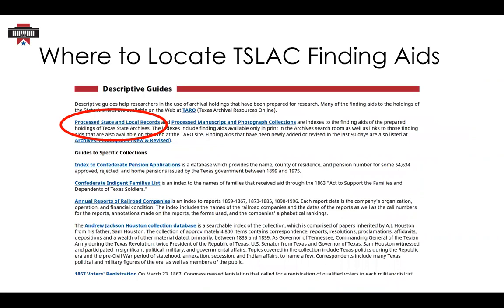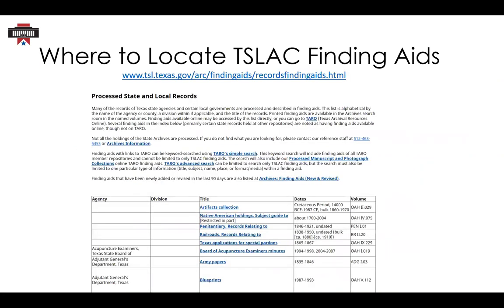When you click on Descriptive Guides it'll lead you further down the page, and then you'll see Processed, State, and Local Records. So lastly, you'll want to click on that. This screenshot shows just the very top of our Processed State and Local Records page. The main feature of this web page is a table organized alphabetically by state or local agency name.